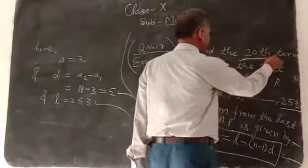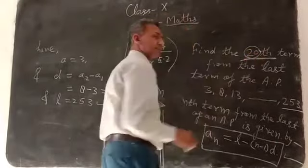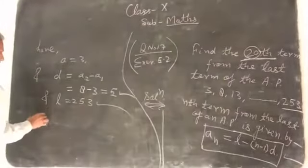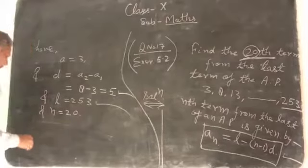And n term is 20. This is what we have to do. And here equal 20. Clear?